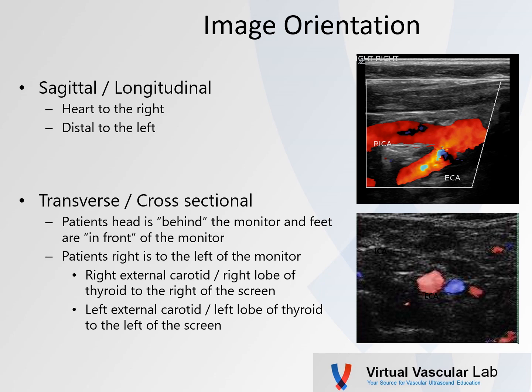A transverse or cross-sectional image is a little more confusing sometimes. The patient's head is really behind the monitor and the feet are in front of the monitor. Therefore, the patient's right is to the left side of the monitor. So in a transverse or cross-sectional view, the right external carotid or the right lobe of the thyroid, which is medial, should be to the right of the screen. For the left external carotid or left lobe of the thyroid, medial is also to the left of the screen. So remember: right external to the right, left external to the left — that's proper orientation.